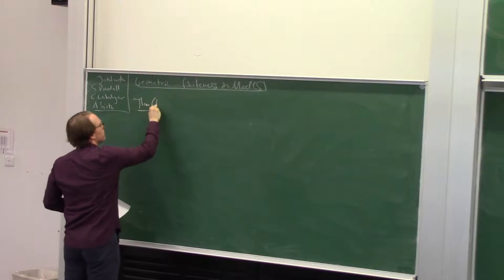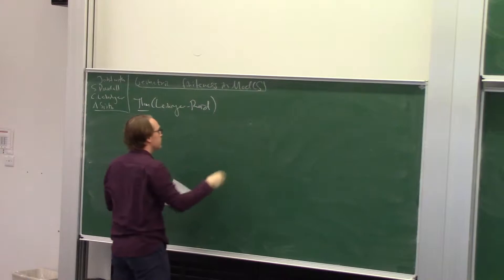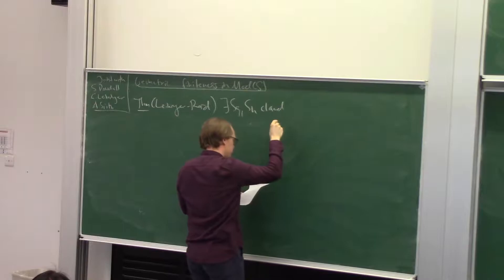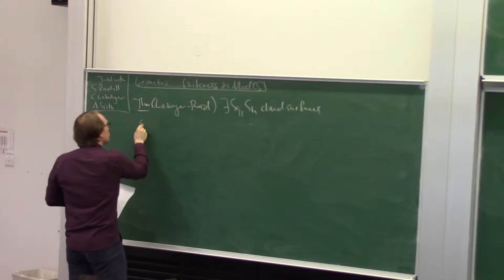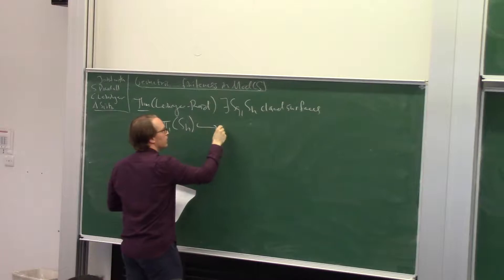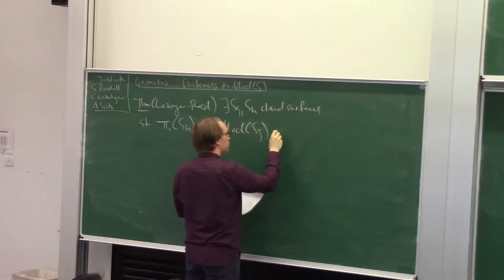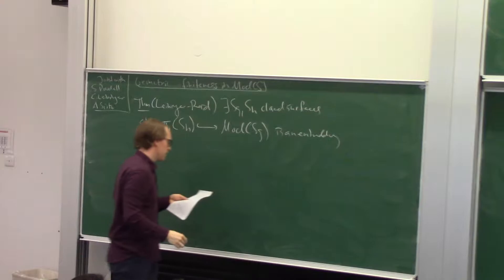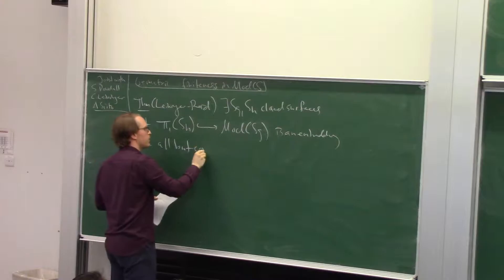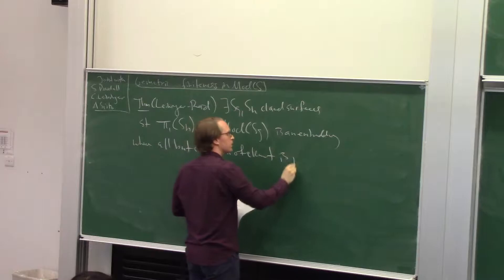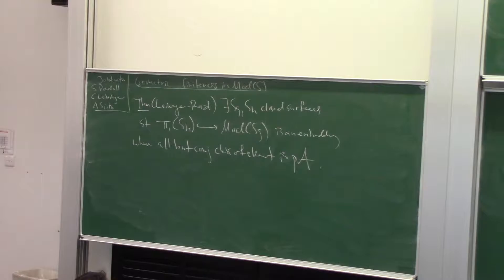Here's a theorem — a Leininger overview. When you find two closed surfaces so that you get an injection of the fundamental group of one into the mapping class group of the other, all but one conjugacy class of elements are pseudo-Anosov. So it's as close as it can be, in some sense, to having a purely pseudo-Anosov surface subgroup.